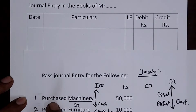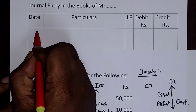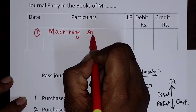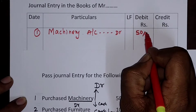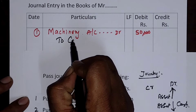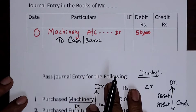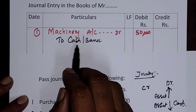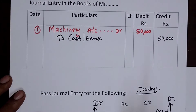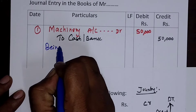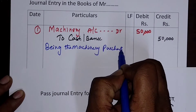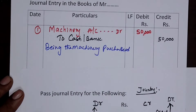The very first one is purchased machinery rupees 50,000. The journal entry is: Machinery Account — Debit — rupees 50,000. What is going out of the business is written on the next line: To Cash or Bank Account — rupees 50,000. In companies, cash normally does not go out; in sole trading concerns it is cash. The narration on the next line reads: Being the machinery purchased.